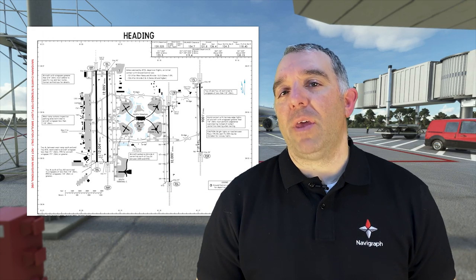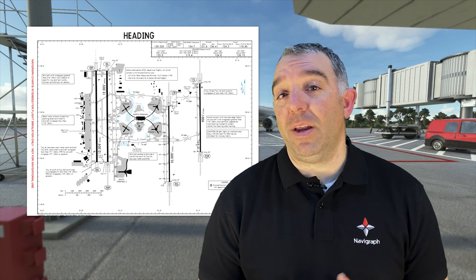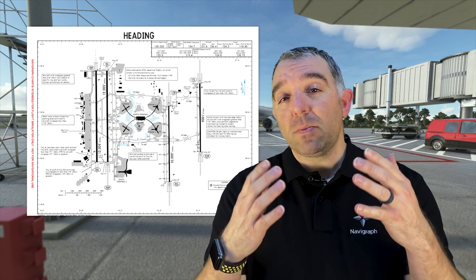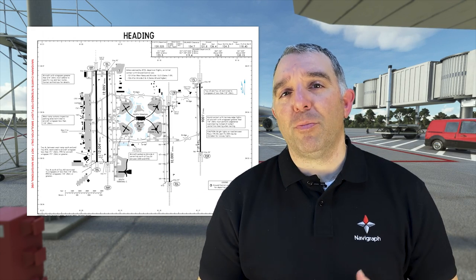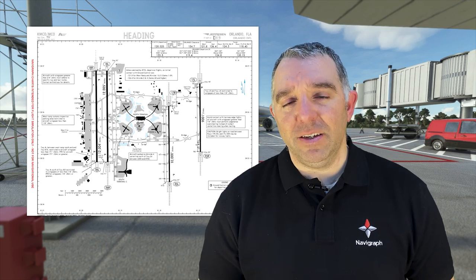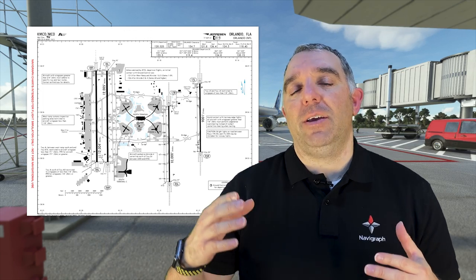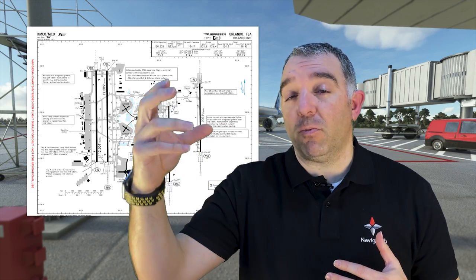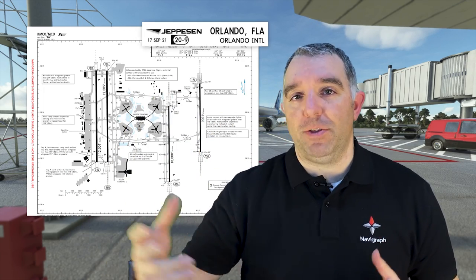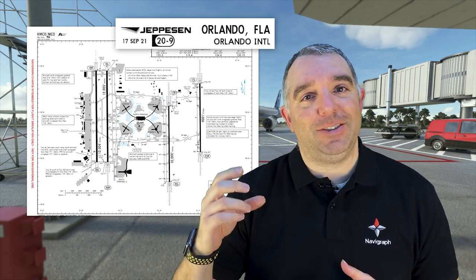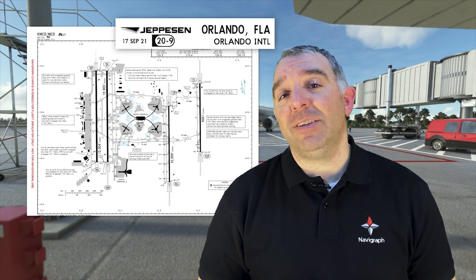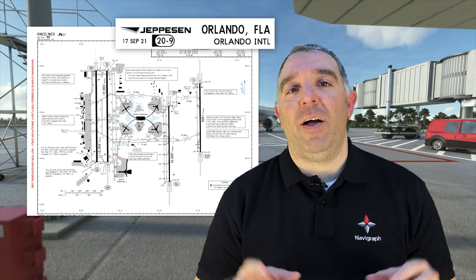The reason why they put the heading the way it is is because when these charts are printed they are easier to flip. If you look at the right-hand corner of the chart you can actually see where you're going easier. That's kind of why they laid it out like that.